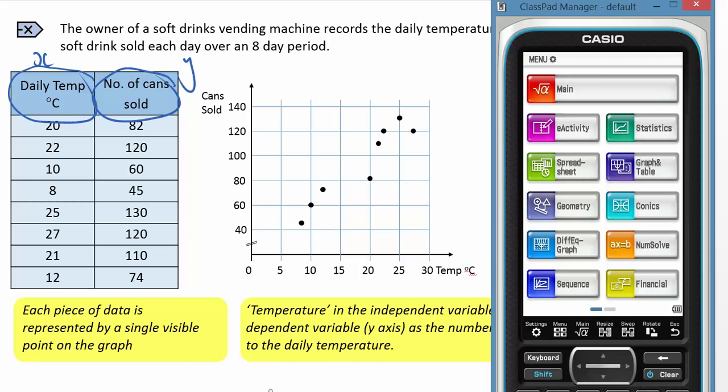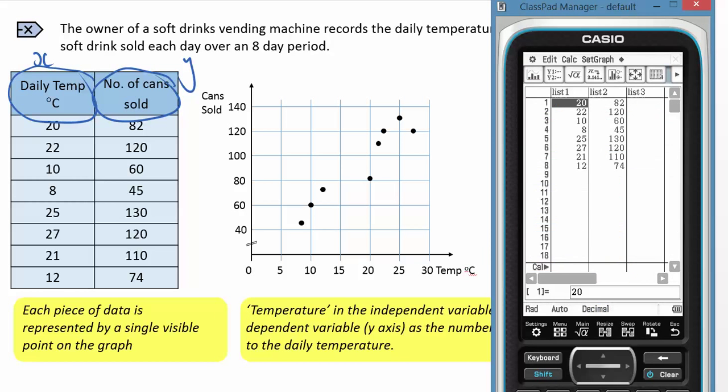On your calculator we go to the statistics and then we enter the values making sure they're paired up. So 20, 82, 22, 120, 10, 60, and so on.